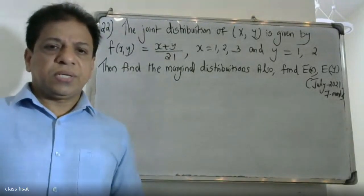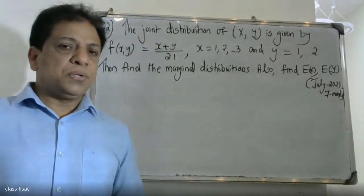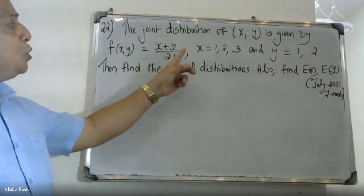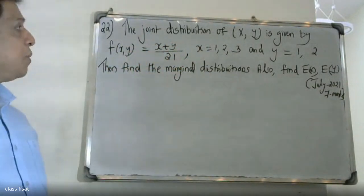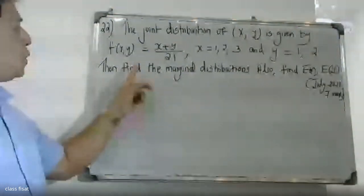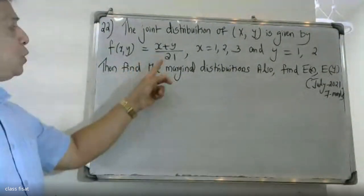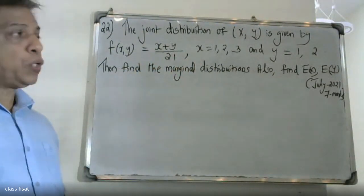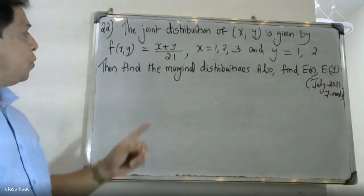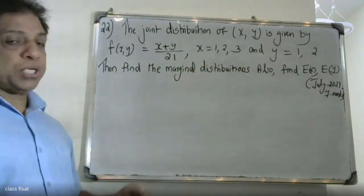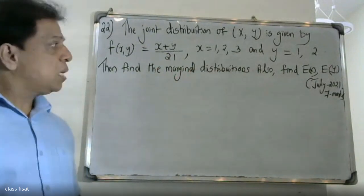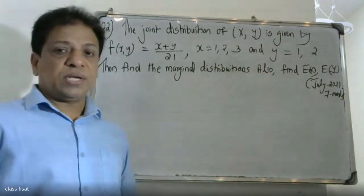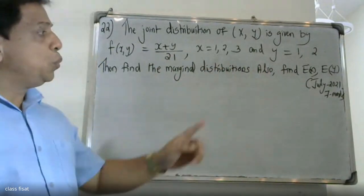Good morning students. The joint distribution of X and Y is given by f(x,y) = (x+y)/21, where x equals 1, 2, 3 and y equals 1, 2. Find the marginal distributions and also find the expectation of X and expectation of Y.